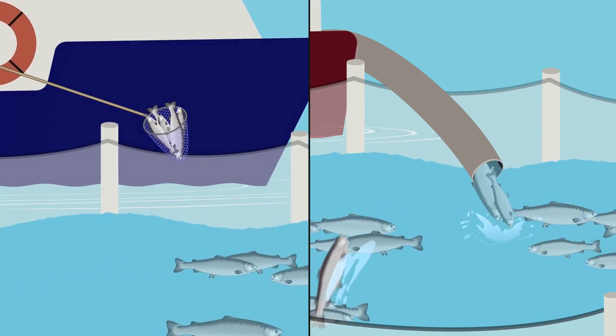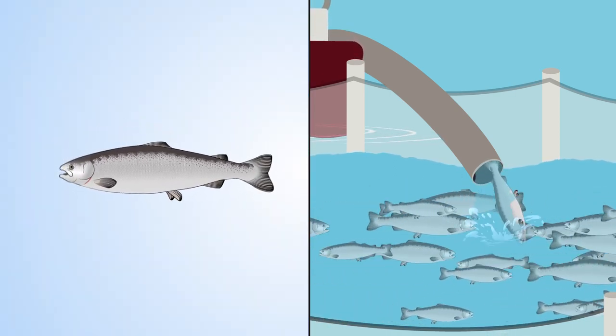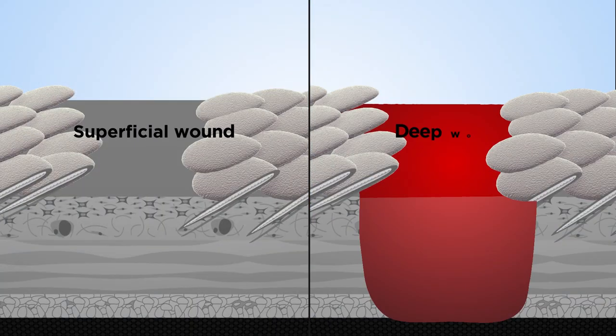Mechanical damage occurs through handling procedures such as pumping and crowding. However, fish have evolved a rapid way of healing.